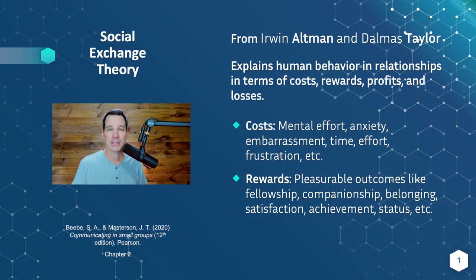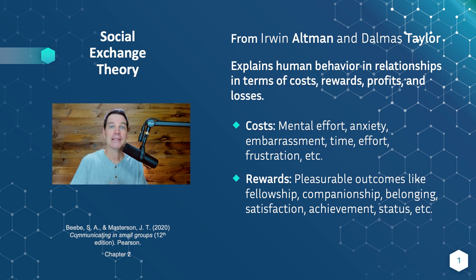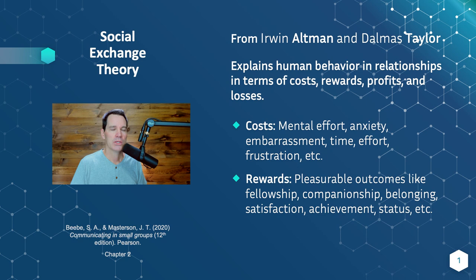Altman and Taylor gave us this social exchange theory, and it implies an economic exchange metaphor for how we make decisions about the relationships and groups we participate in. The theory explains human behavior in relationships in terms of costs, rewards, profits, and losses.